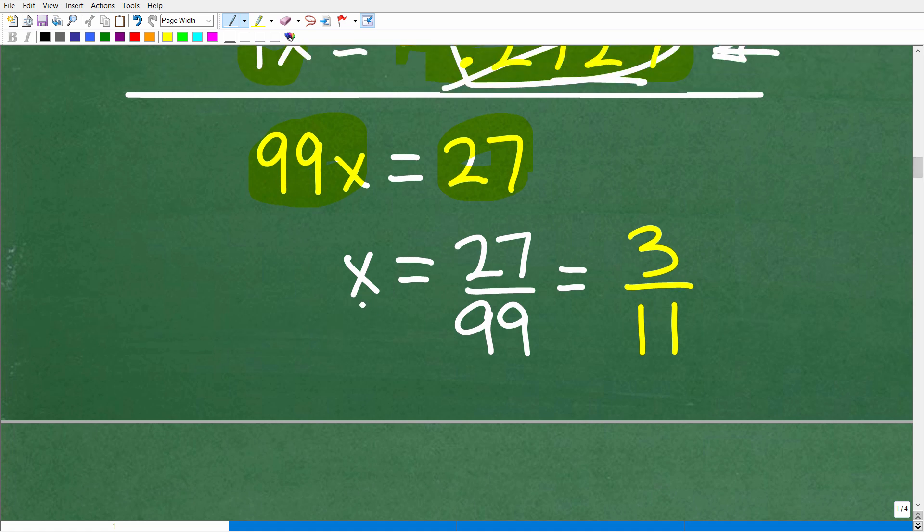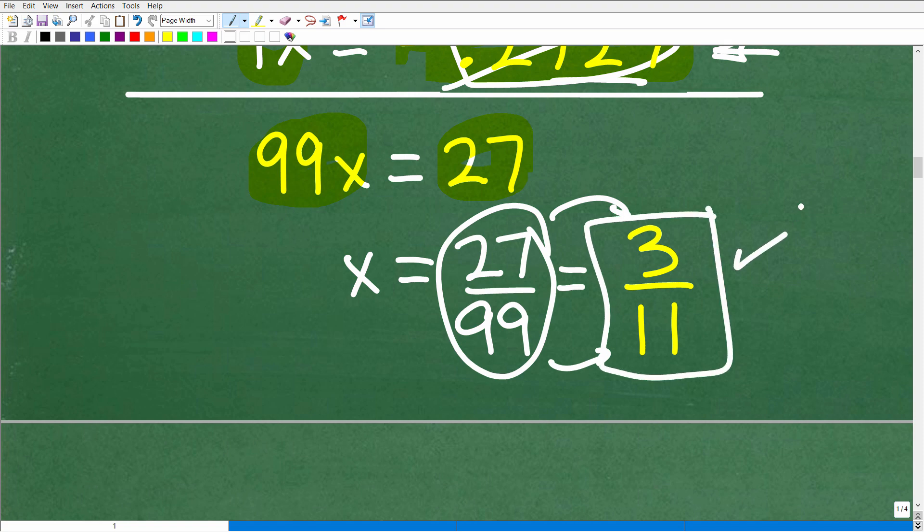When we do that, look at what we have here. We have 99x equals 27. Let's solve for x. Remember, x is that fraction. So we divide both sides of the equation by 99, and we get 27 over 99. And we can reduce this fraction into 3 over 11. Just divide both the numerator and denominator by 9, and you get the fraction 3 over 11.